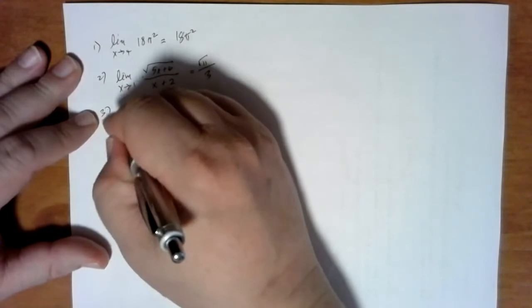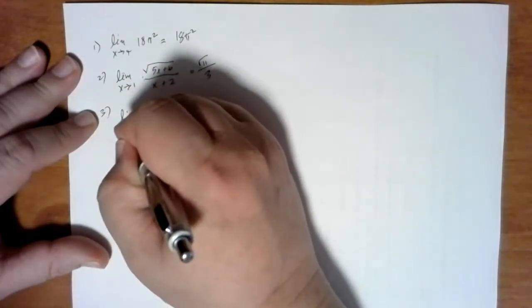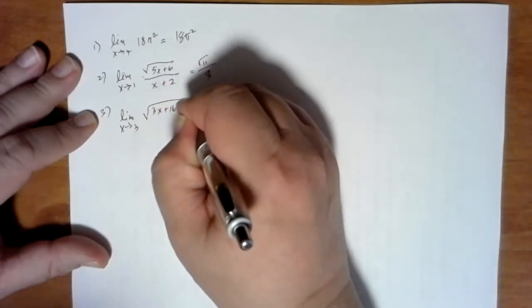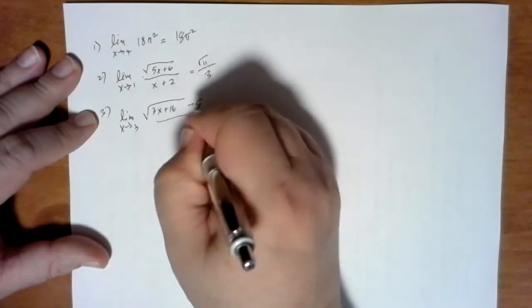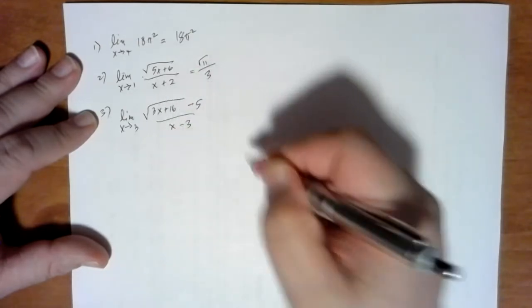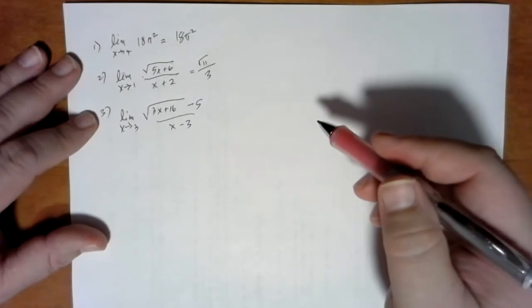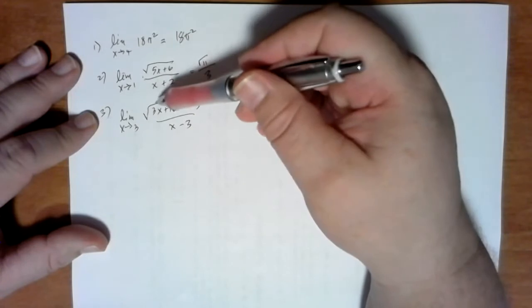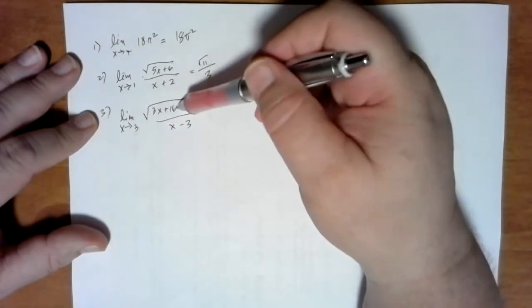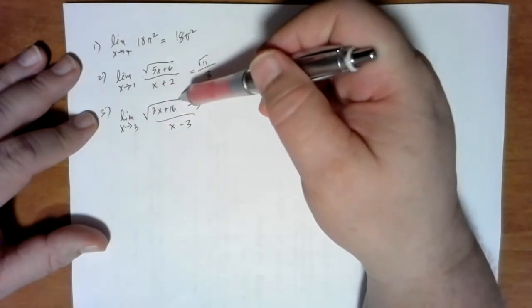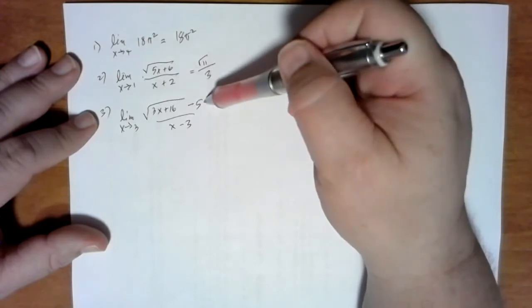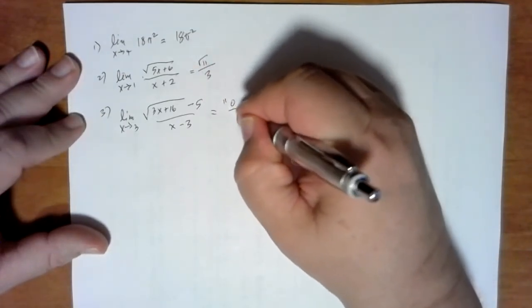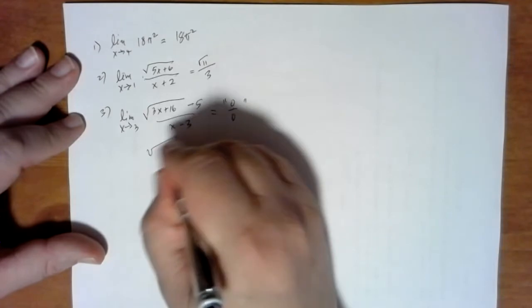You're ready for a harder one now. Limit as x approaches 3 of the square root of 3x plus 16 minus 5 divided by x minus 3. Notice that if I plug in 3, I get 9 plus 16 is 25, so that's the square root of 25, which is 5 minus 5 is 0 divided by 0. So this is a 0 over 0 form, and so I'm going to multiply that by a conjugate.